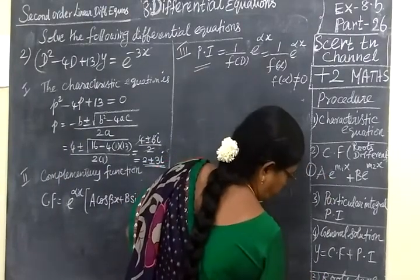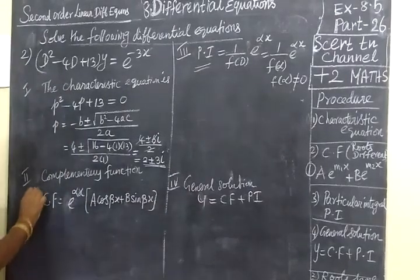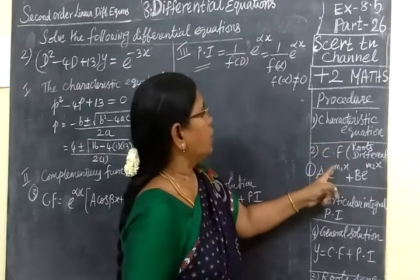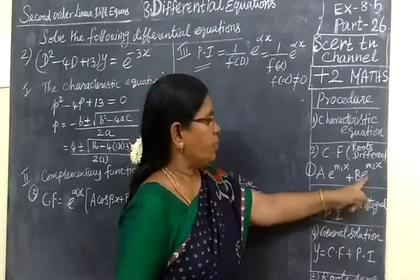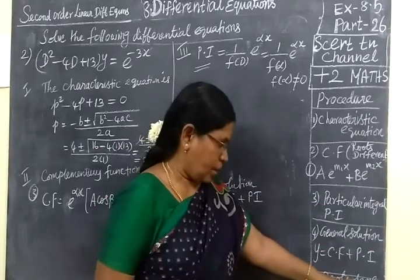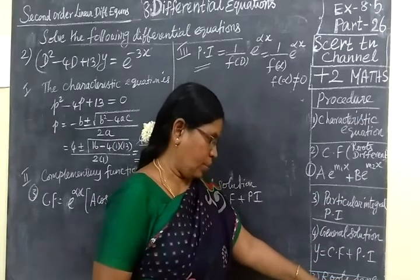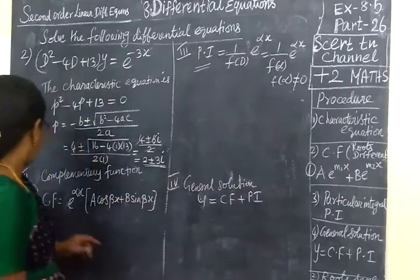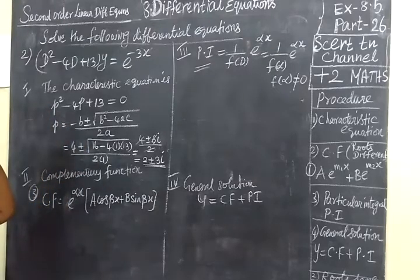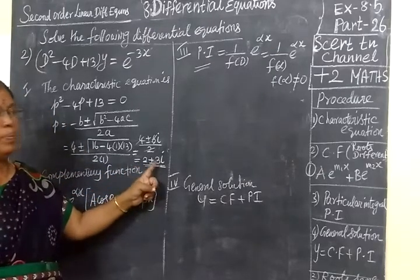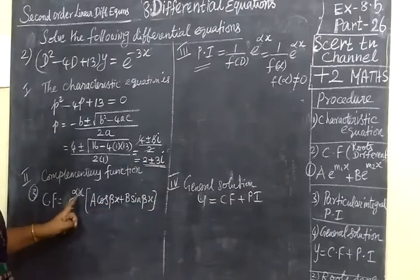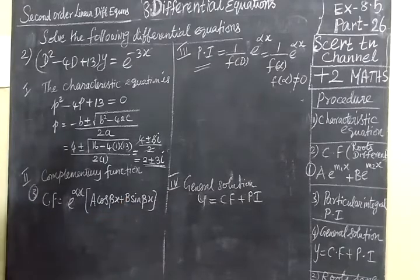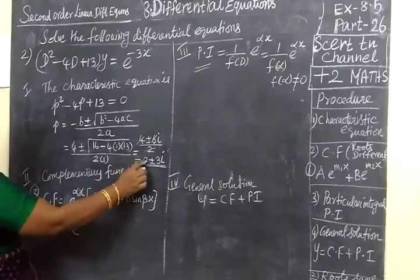It is the formula to find complementary function. Alpha is 2. If the roots are real and equal, ax plus b e power mx. If the roots are imaginary, same means real and imaginary part, e power alpha x, a cos beta x plus b sin beta x.